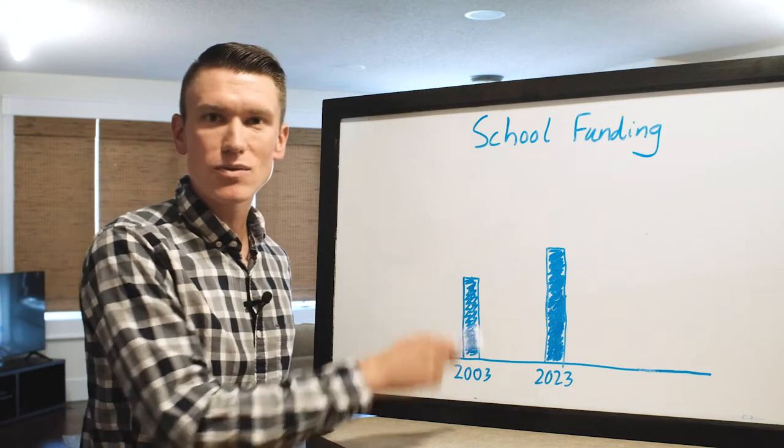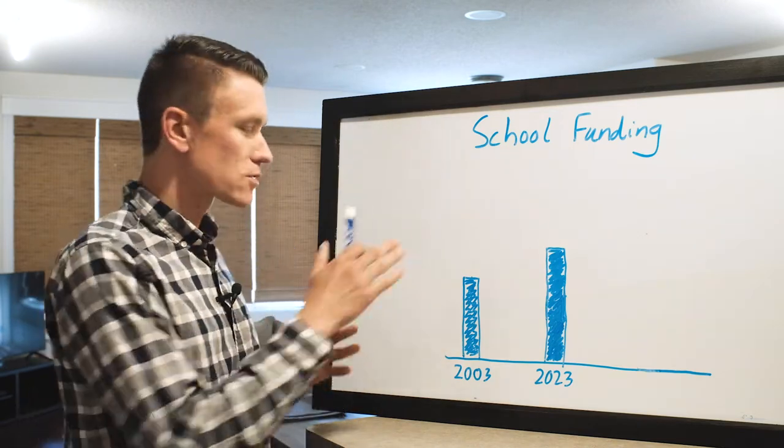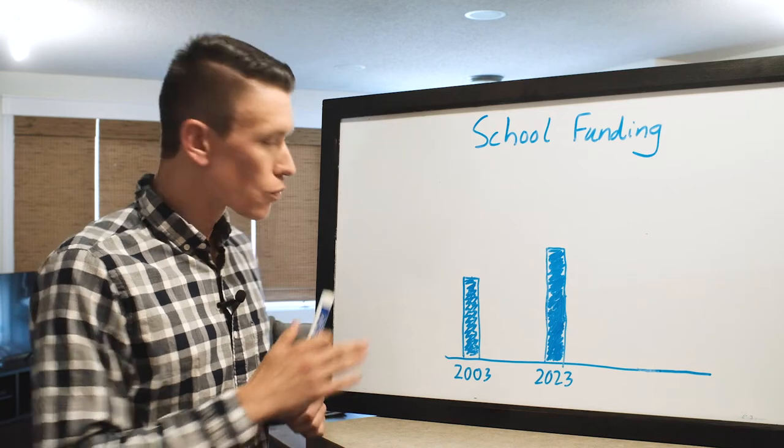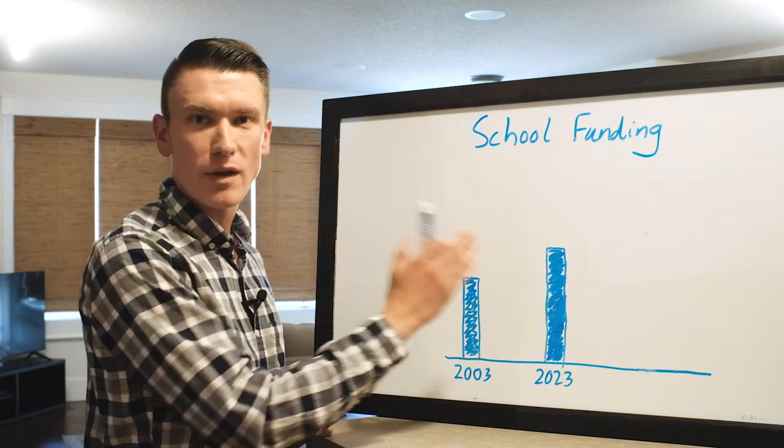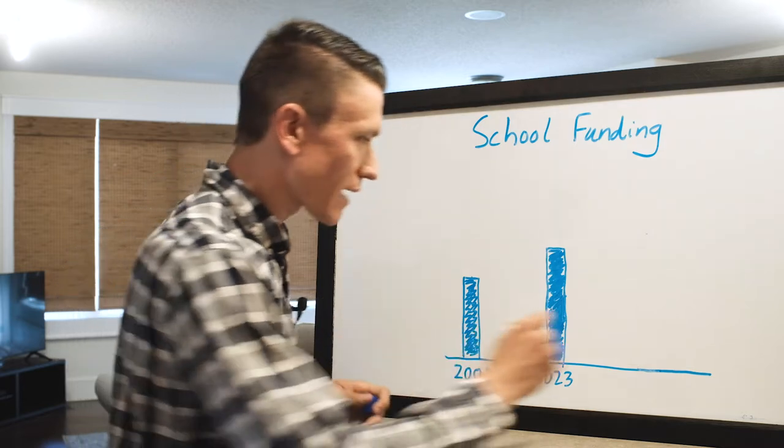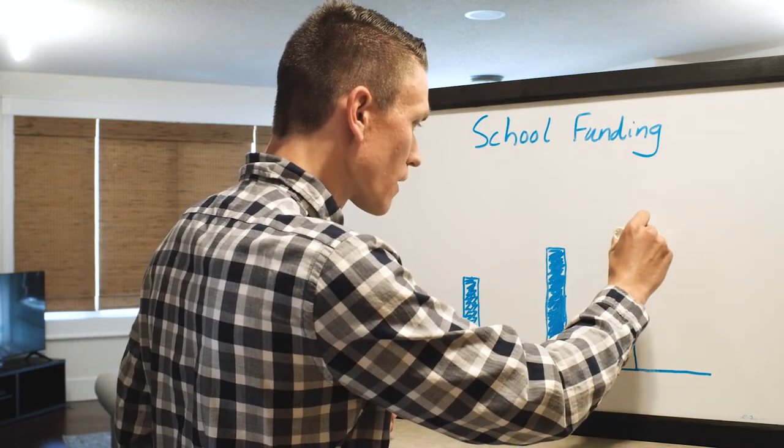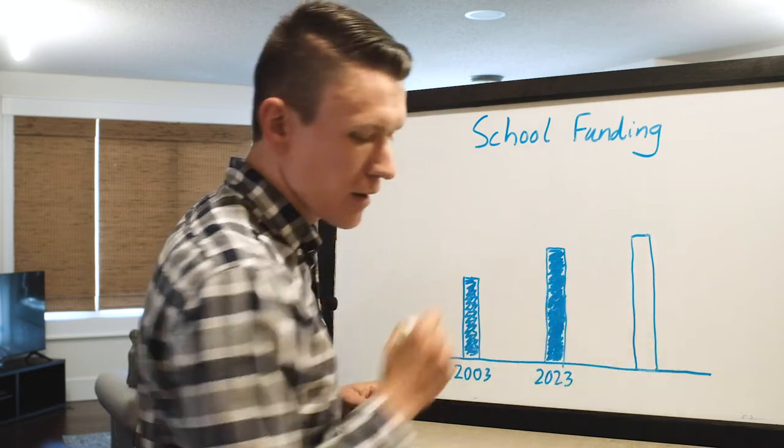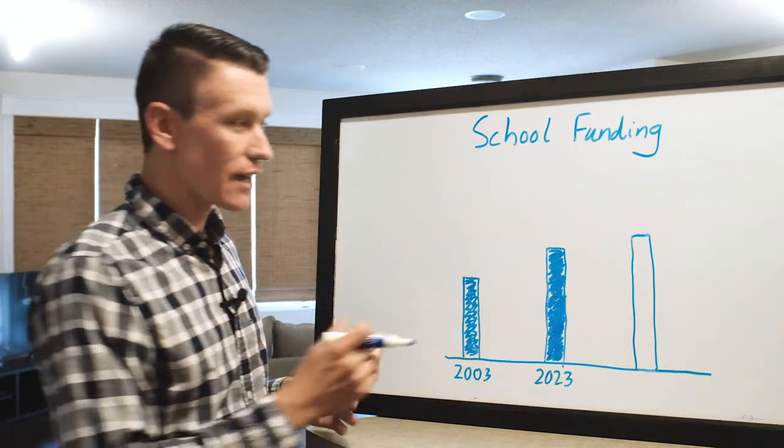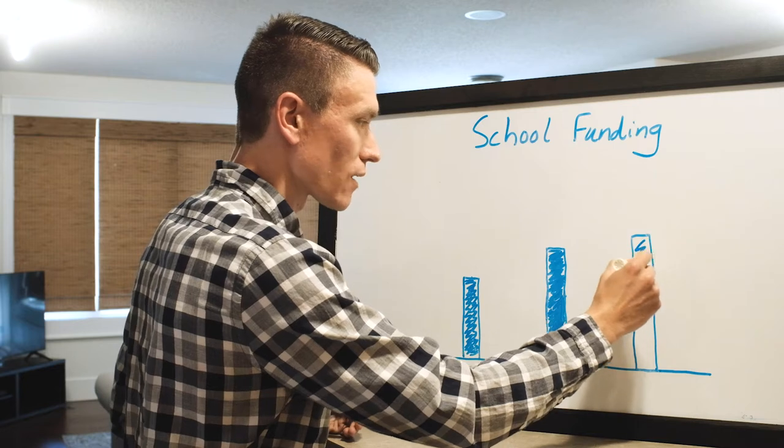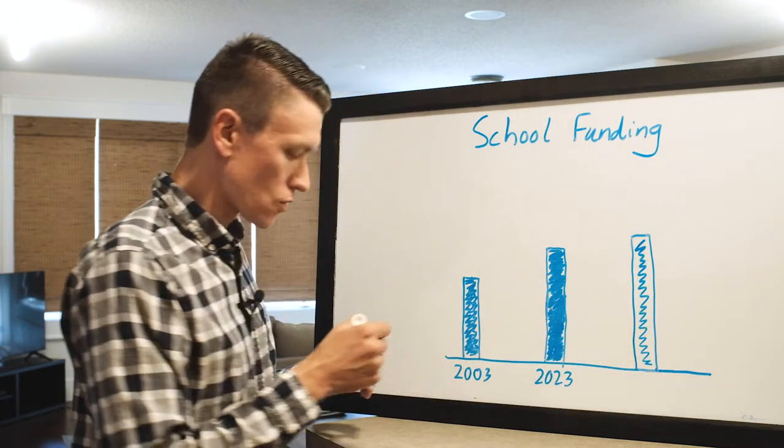If we had just gone back to 2003 and said we're going to put school funding on autopilot we're just going to adjust it for inflation every single year. If we had done that the bar would look like this go all the way up here and we would have about $7,661 per student for our schools.